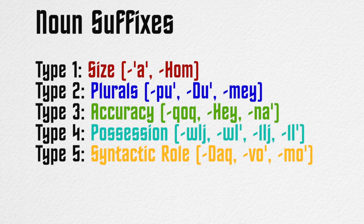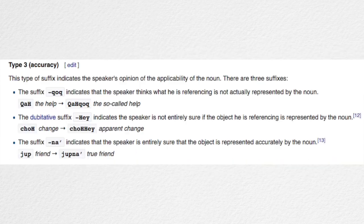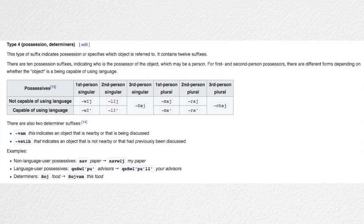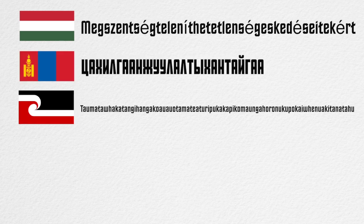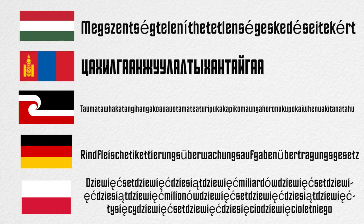Klingon uses a clever system of organizing its suffixes, involving numbering them into different categories. There are nine categories of Klingon suffixes, dealing with size, number, qualification, possession, and syntactic markers, etc. Now, in most agglutinative languages, there are also a few examples of really long words to show how crazy it can get, and Klingon is certainly no different.